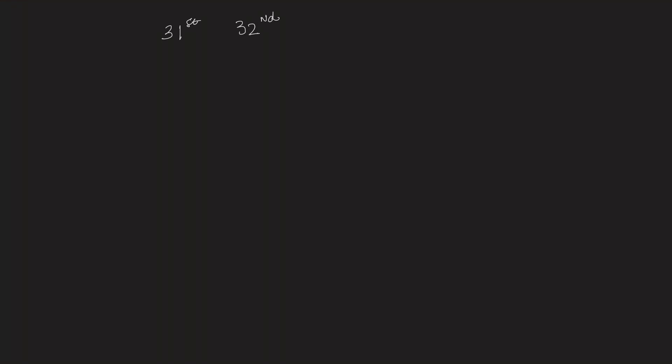In the previous problem, the personal birthmate problem, we saw that if n is much less than the number of days in a year, capital N, then the probability that at least one out of n persons matches is approximately equal to e to the power minus n by N.